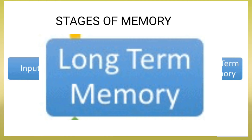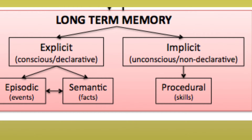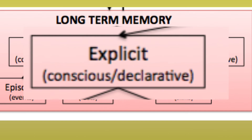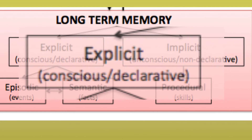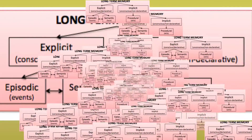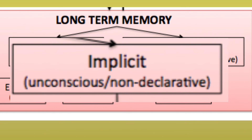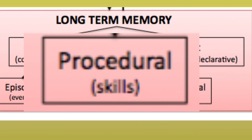Long-term memory refers to the continuing storage of information. This information is largely outside of our awareness but can be called into working memory to be used when needed. Some memories are fairly easy to recall while others are much more difficult to access. Long-term memory is usually divided into two types: explicit and implicit. Explicit memories, also known as declarative memories, include all of the memories that are available in consciousness. Explicit memory can be further divided into episodic memory — the memory of specific events — and semantic memory, or knowledge about the world. Implicit memories are those that are mostly unconscious. This type of memory includes procedural memory, which involves memories of body movement and how to use objects in the environment. How to drive a car or use a computer are examples of procedural memories.